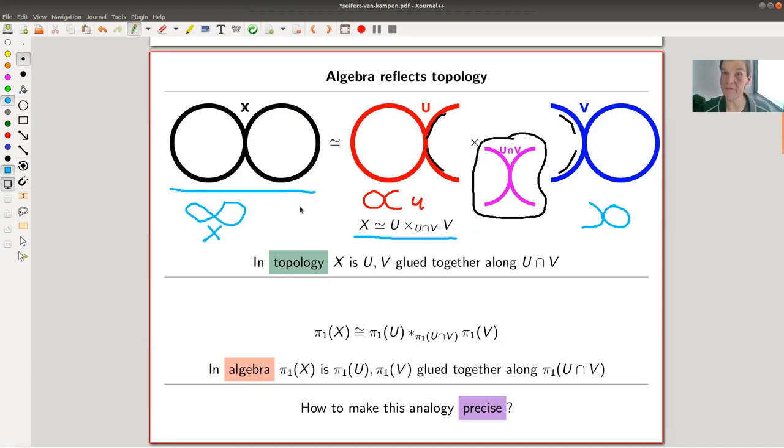We're doing algebraic topology, so we hope to construct our invariants such that they reflect those properties. It would be really nice to have this formula translated into algebra. The fundamental group of X should be glued together from the fundamental group of U and the fundamental group of V along the intersection. That's basically what the Seifert-van Kampen theorem says, and that's exactly why the theorem is so important in practice.